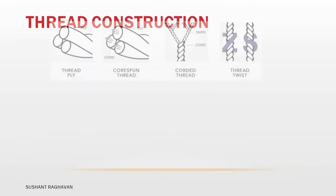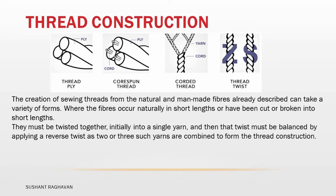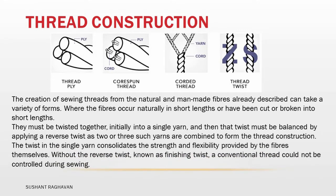Thread construction. The creation of sewing threads from natural and manmade fibers can take a variety of forms. Where the fibers occur naturally in short lengths or have been cut or broken into short lengths, they must be twisted together initially into a single yarn, and then that twist must be balanced by applying a reverse twist as two or three such yarns are combined to form the thread construction.